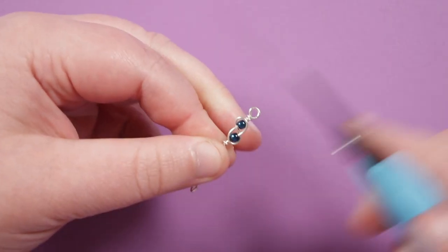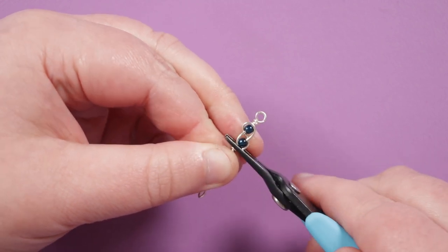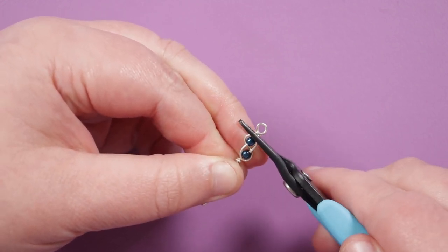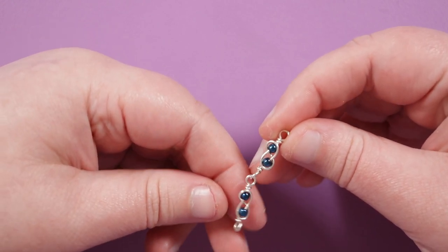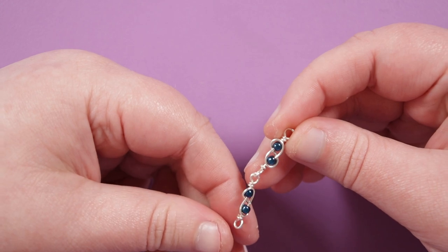Now if you need to you can always take your pliers just going to flatten things down if you find that they aren't completely flat but otherwise that's how you make this chain link and connect them together to create a full length and of course you can then make it however long you want to.